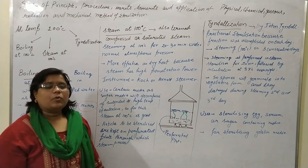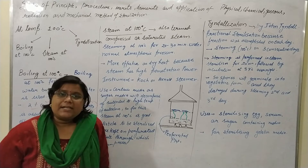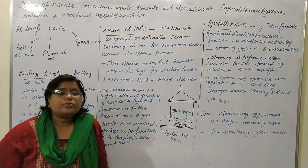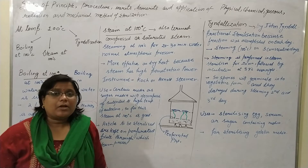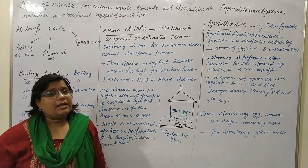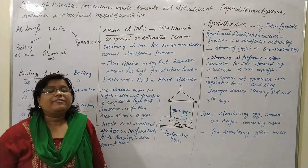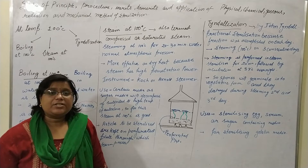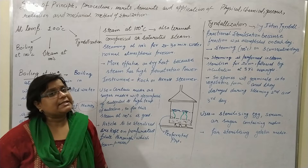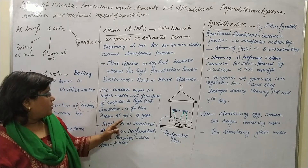Some media like sugar media and gelatin media will decompose at high temperatures in the autoclave. So for those, we should use the Koch or Arnold steamer — steam at 100 degrees Celsius — because such media containing sugar or gelatin will decompose above 100 degrees Celsius.